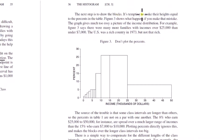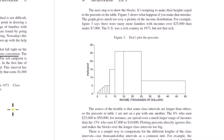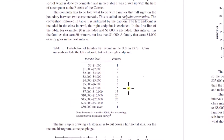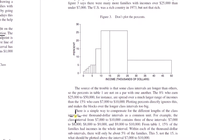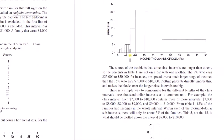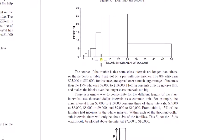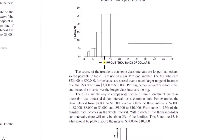The next step is to draw the blocks. It's tempting to make their heights equal to the percents in the table. Figure three shows what happens if you make that mistake. For the interval 10 to 15, if you look up 26% and make the height 26, the graph gives a much too rosy picture of the income distribution. For example, it would say there were more families with incomes over $25,000 than under $7,000 — the U.S. was a rich country in 1973, but not that rich. Instead, the area of each block needs to equal the percent for that interval. So for 10 to 15, you compute: five times height equals 26.